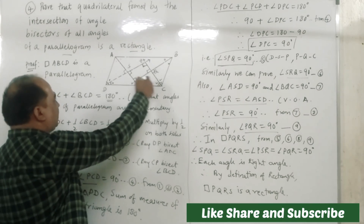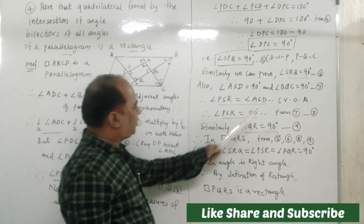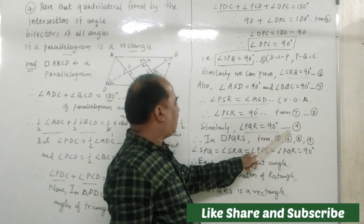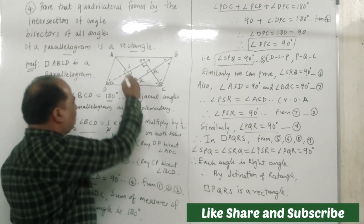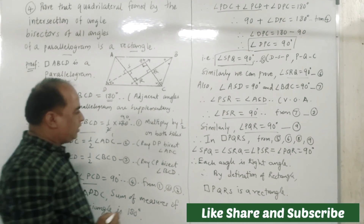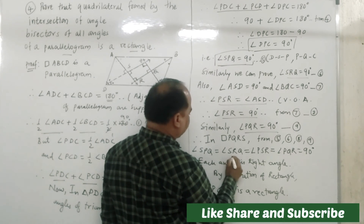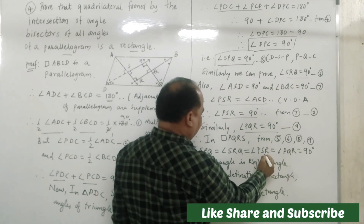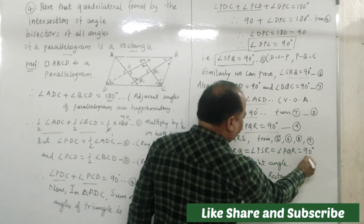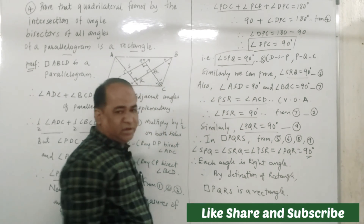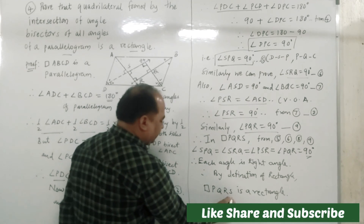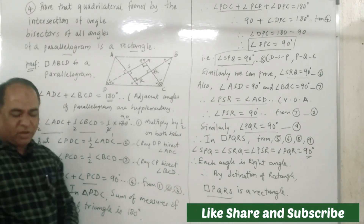So in quadrilateral PQRS, from statements five, six, eight, and nine, we get that all angles in quadrilateral PQRS are 90 degrees. Angle SPQ equals 90 degrees — each angle is a right angle. Therefore, by the definition of a rectangle, quadrilateral PQRS is a rectangle.